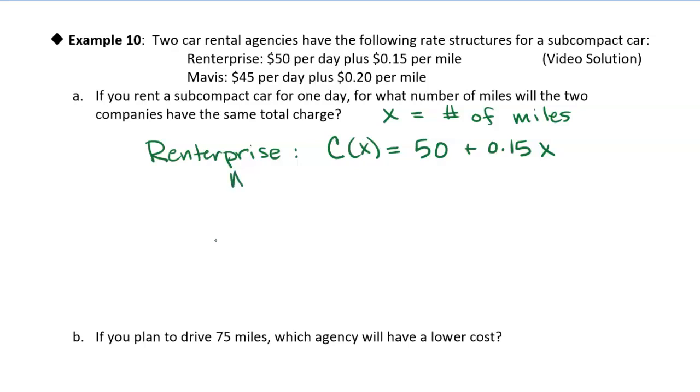Now let's do the same thing for Mavis. Let's write a cost equation. Let's actually distinguish these two, because they are different equations. So I'm going to call this C1, or I could call it CR for Rent-er-Prize. Let's call this C sub M. So sometimes you use subscripts to distinguish. We have two cost equations. It makes sense to use C, but they're two different cost equations, because they're two different rental agencies. So I'm going to distinguish these two with a little subscript.